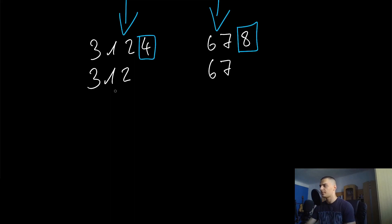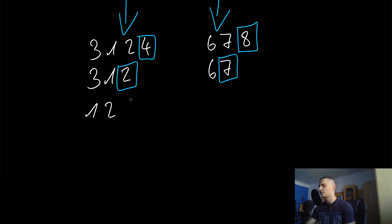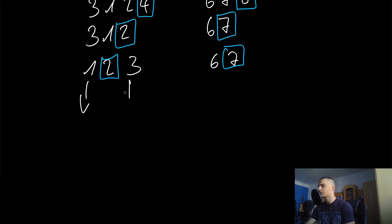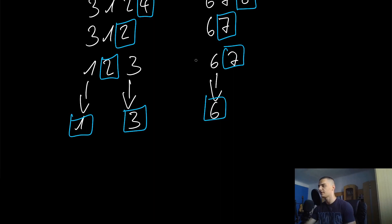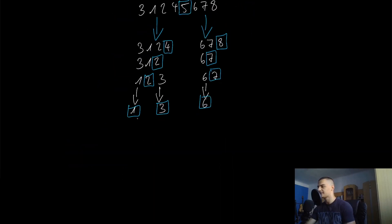We split into sublists and pick pivot elements again — for example 2 here and 7 here — then repeat the same process. In this case it would be 1, 2, 3 and 6, 7. We split again — each pivot is already in place — and we end up with individual lists: the list of 1, the list of 3, the list of 6.